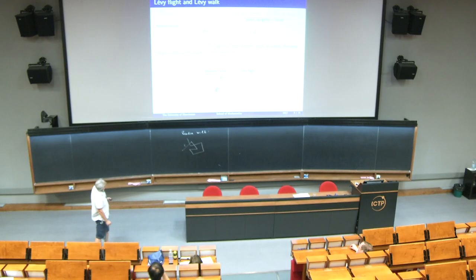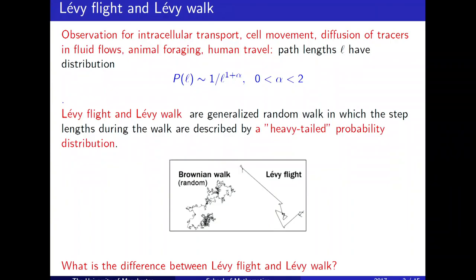The two basic models for this kind of movement are Lévy flight and Lévy walk, with heavy tail probability distributions. What is the difference between them? In biology, researchers often use the terms interchangeably, but Lévy flight is an example of a Markovian process — easy but very unrealistic — while Lévy walk is more realistic but more complicated.